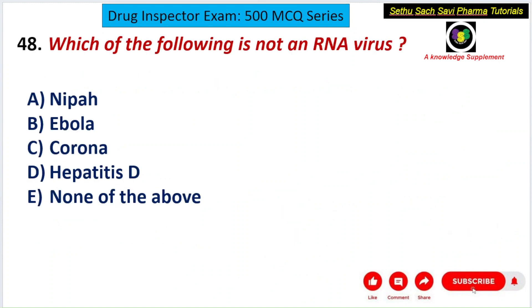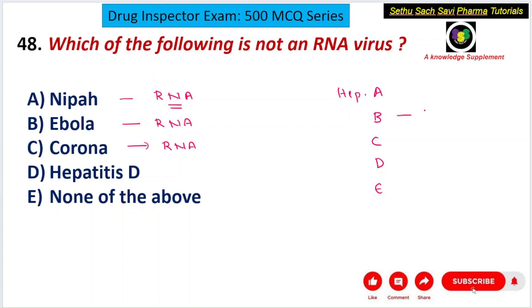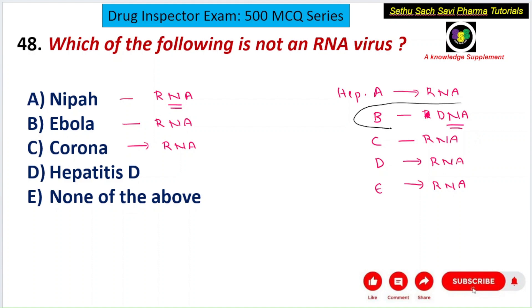Next question: which of the following is NOT an RNA virus? A) Nipah, B) Ebola, C) Corona, D) Hepatitis B, E) None of the above. Nipah contains RNA, Ebola contains RNA, and Coronavirus is an RNA virus. Among the hepatitis viruses, Hepatitis A, C, D, and E all contain RNA — but Hepatitis B is a DNA virus.